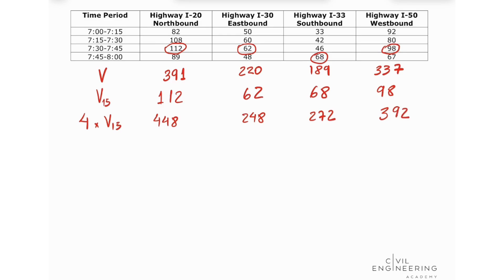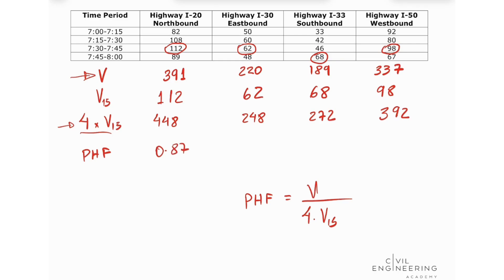Now I need to calculate my peak hour factor. We know the peak hour factor is the hourly volume divided by 4 times V15. So I'm going to divide the numbers in my first line by the numbers in my third line. I find 0.87 for the first location, 0.89 for the second, 0.69, and 0.86.